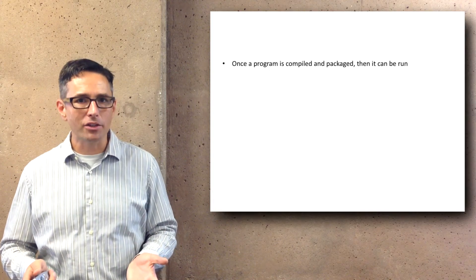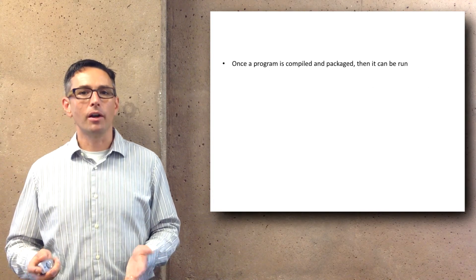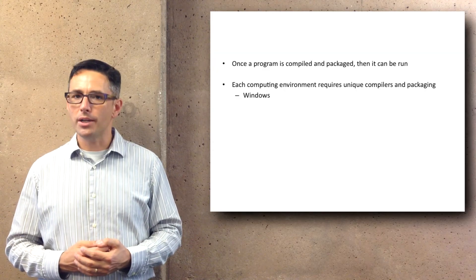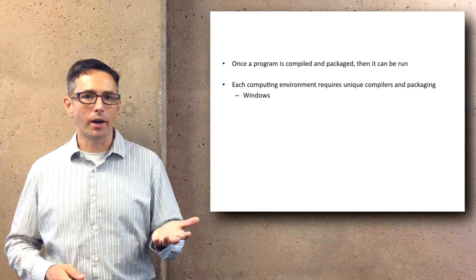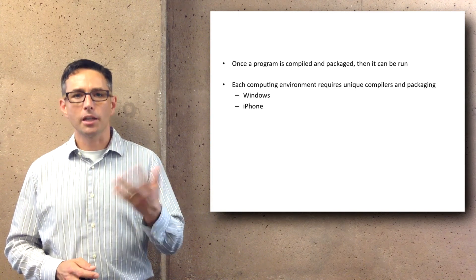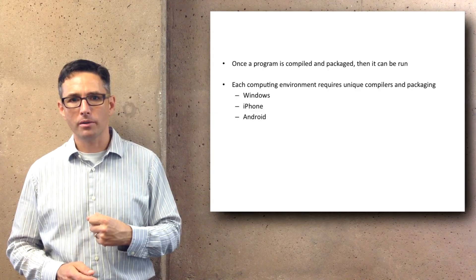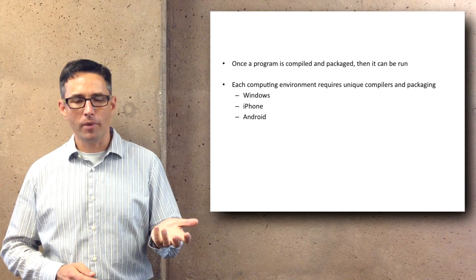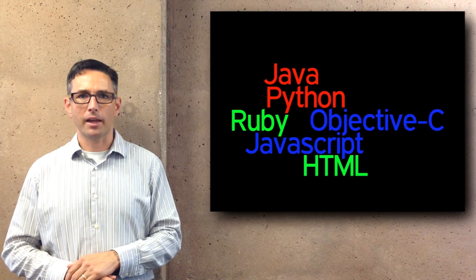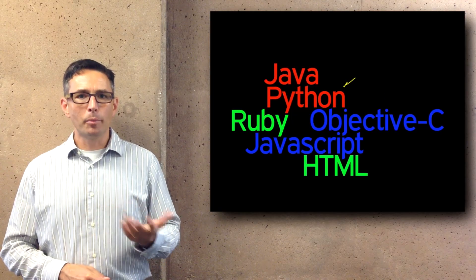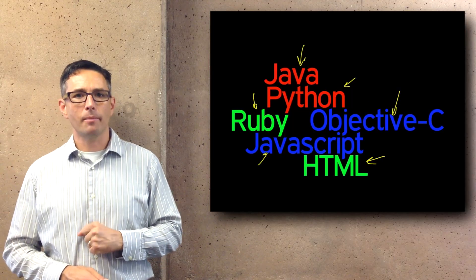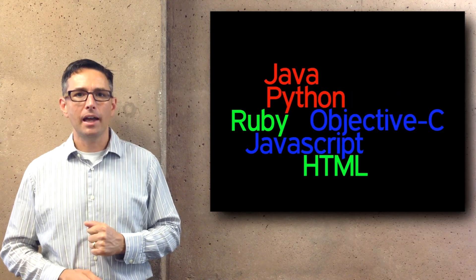Once a program is compiled and packaged, it can be run on the computer. The people that do that are called software developers. Each computing environment requires unique compilers and packaging tools — if you want to write a program for a Windows computer, an iPhone, or Android, each requires a different set of software to write, compile, and package the application. Example programming languages include Python, Ruby, JavaScript, HTML, C-sharp, Objective-C, and Java.